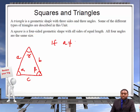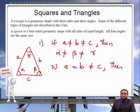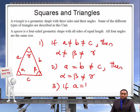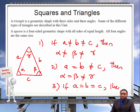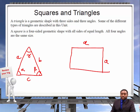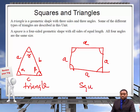Understand that if A is not equal to B, which is not equal to C, then alpha will not equal beta, which will not equal gamma. If A equals B but not C, then alpha equals beta but not gamma. An example of a square has all sides equal to A, and all four angles are equal to each other. So this is a triangle and this is a square.